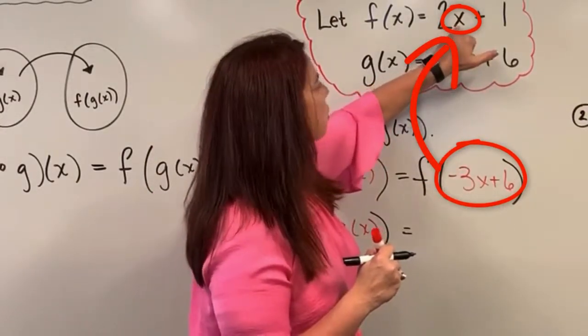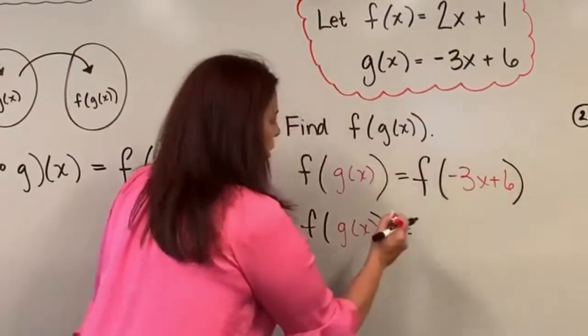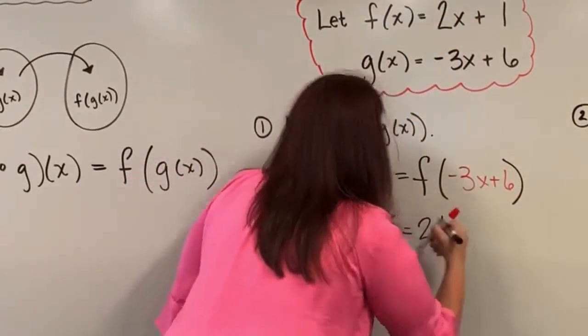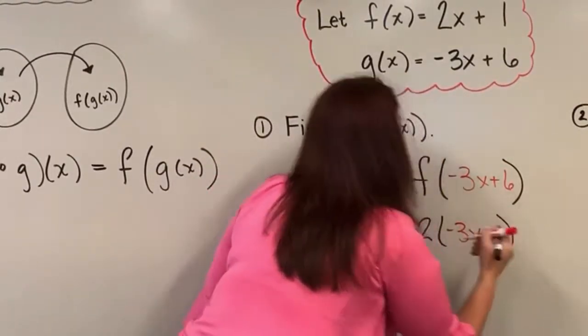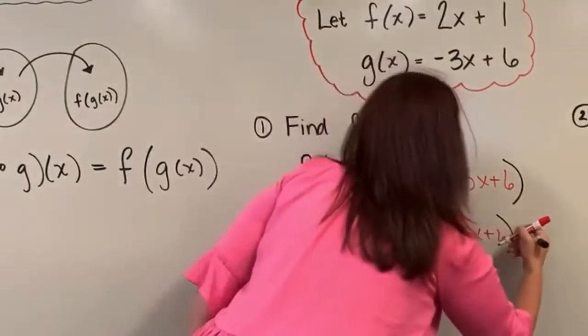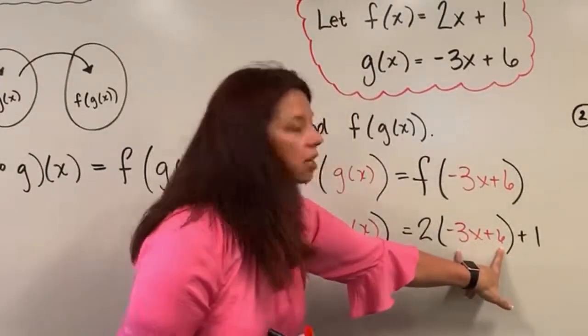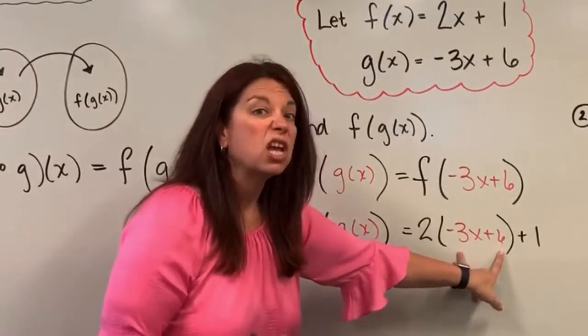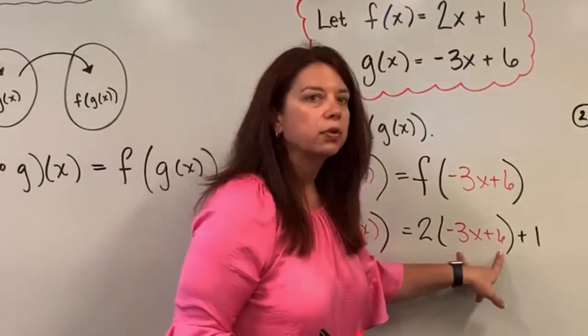So I have f of g of x again equals, in this case, this says take this as an input into this function f. Well, f of x is defined as 2x plus 1. And the idea is instead of all the x's that I have here in my function, I'm going to replace them with this input here, negative 3x plus 6. So here we go. We have 2 times, not x, but instead this whole quantity plus the 1. So I now have 2 times the quantity I put in for x is negative 3x plus 6, and then I'm going to add the 1 to it.